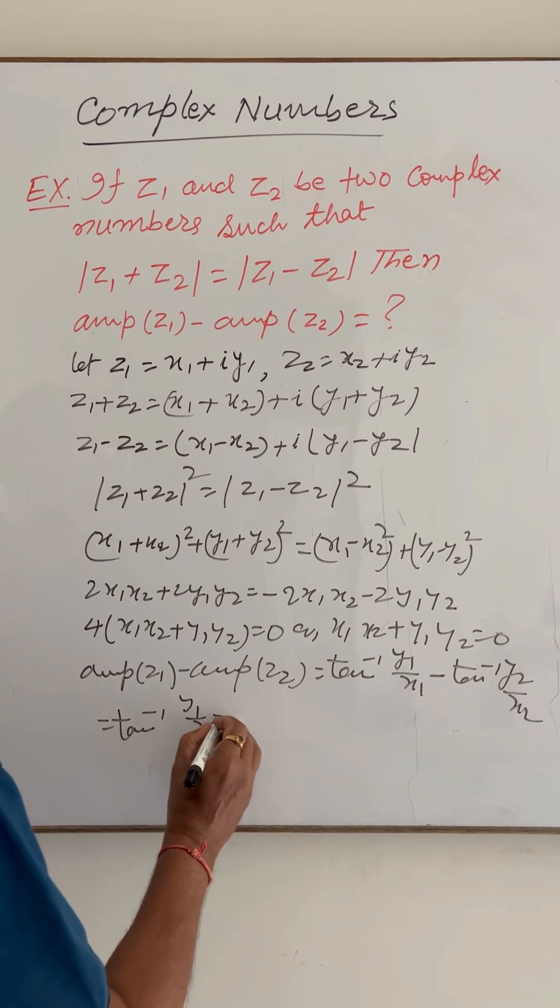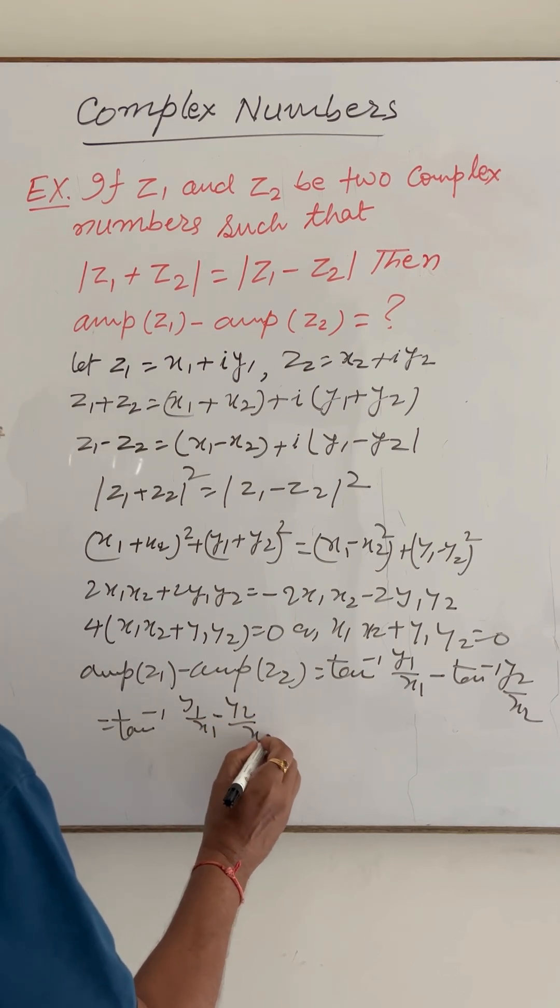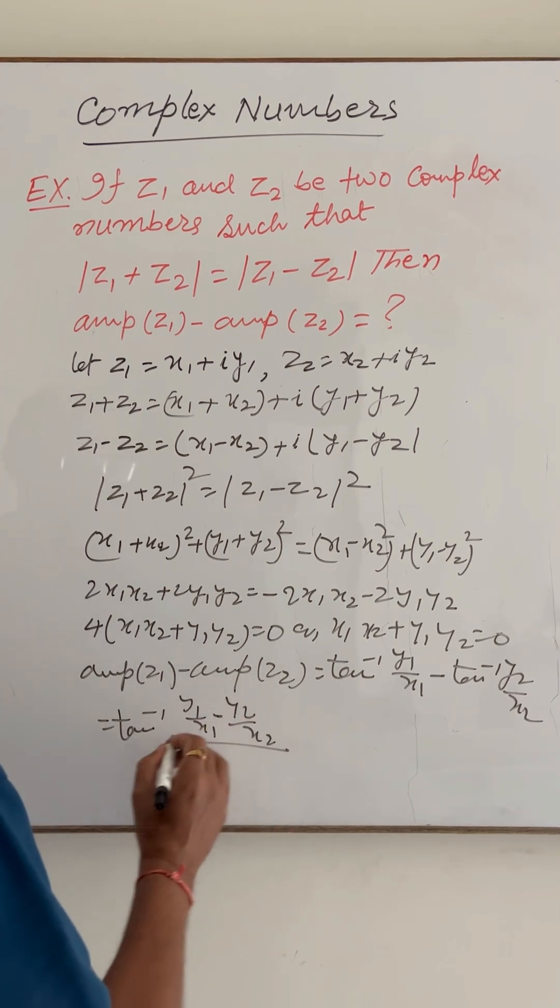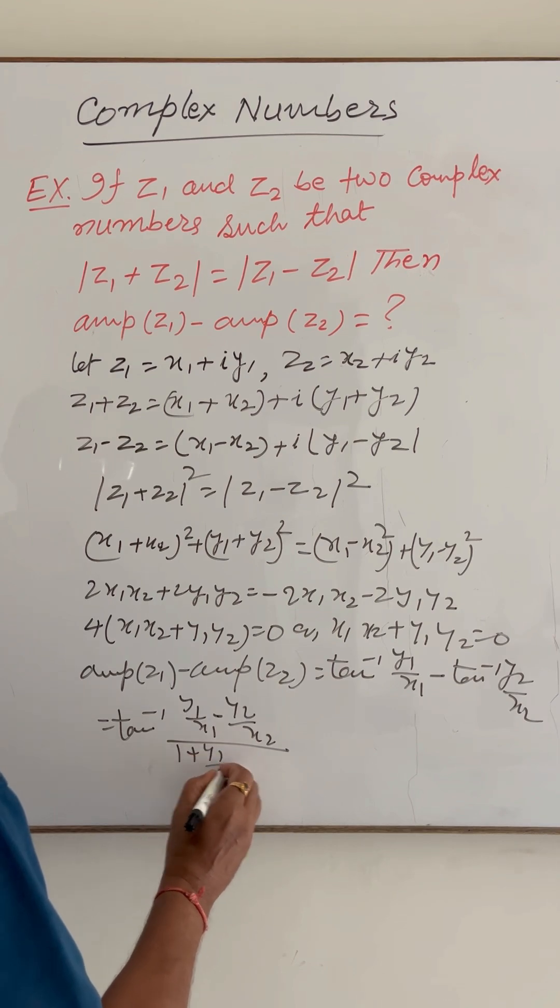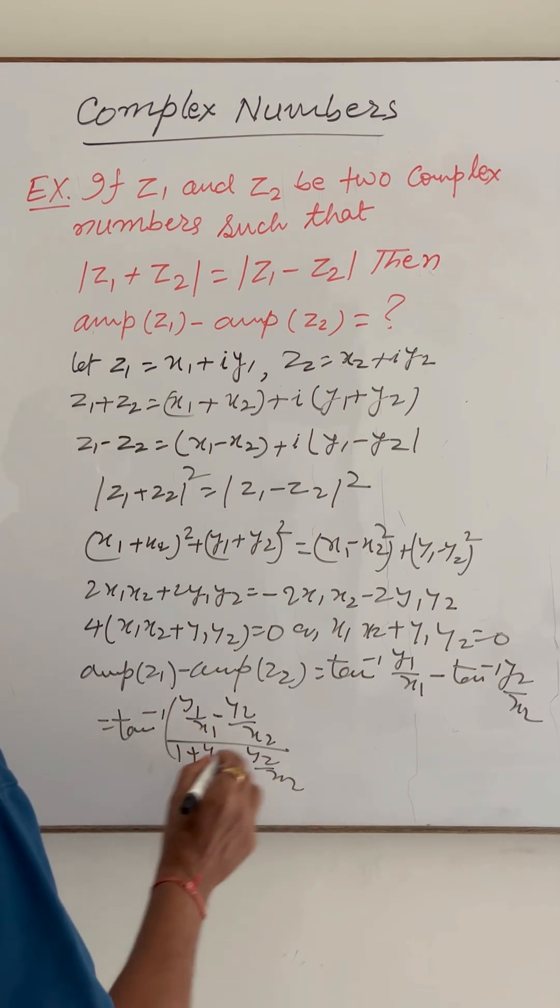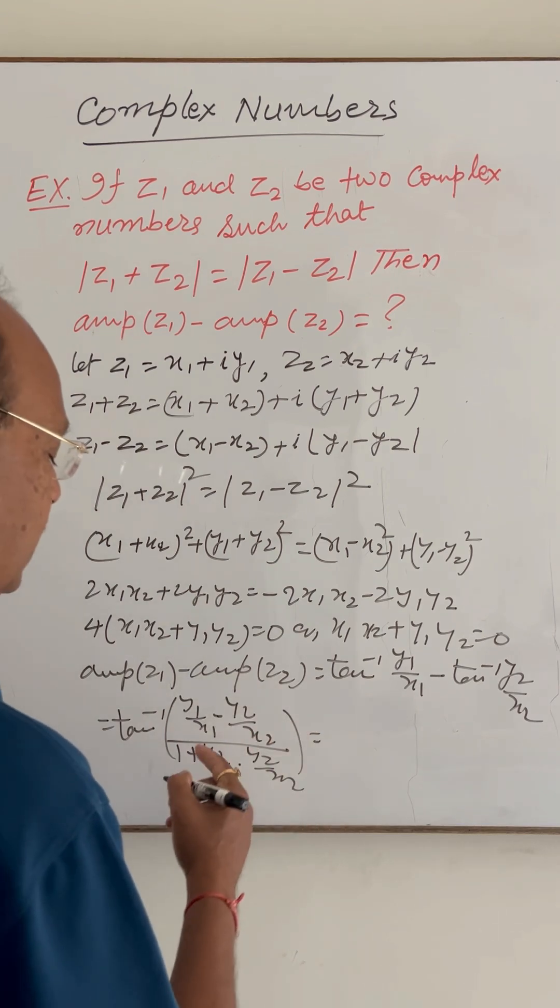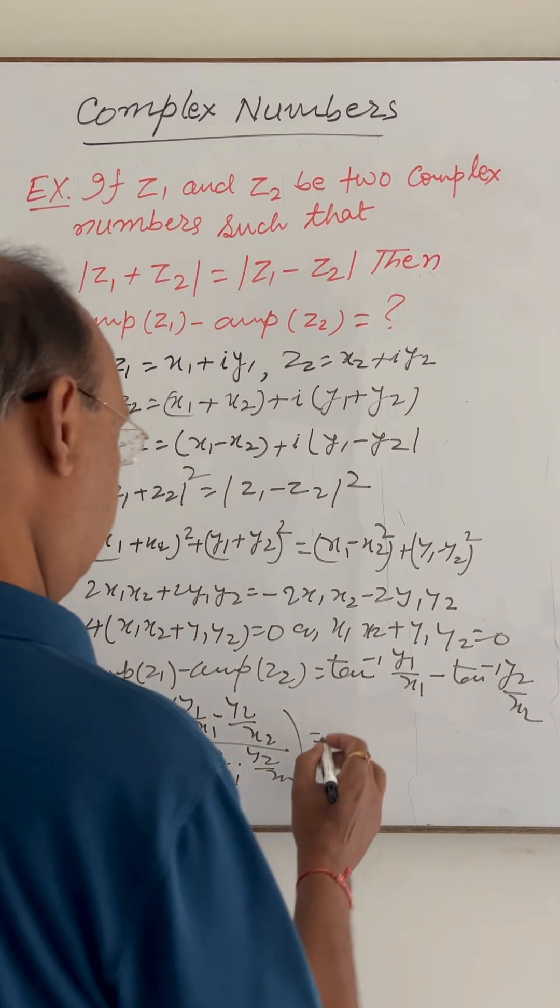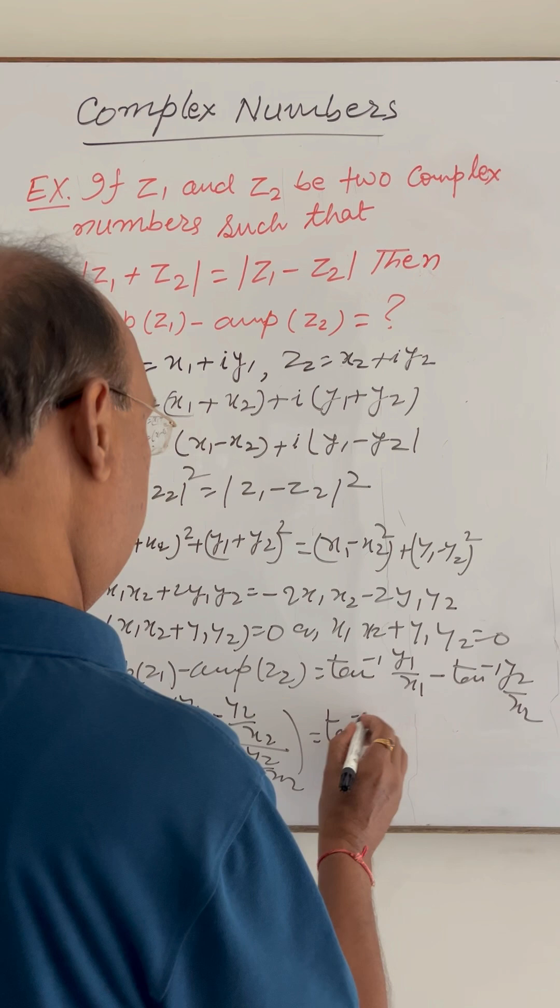(y1*x2 - x1*y2) by (x1*x2 + y1*y2). Simplifying it, we are getting this equals tan inverse...